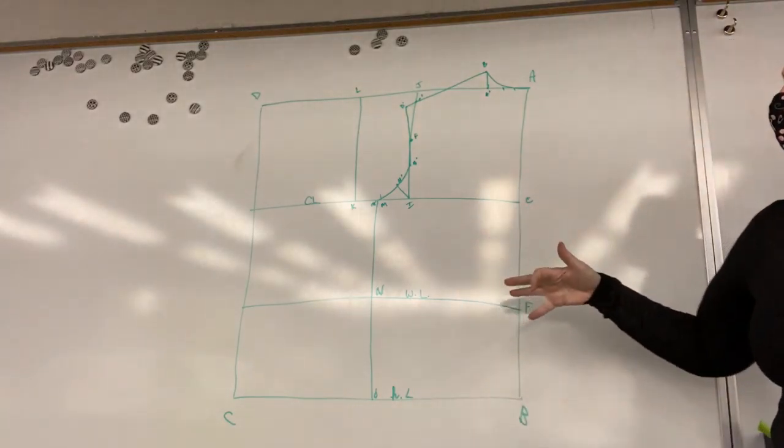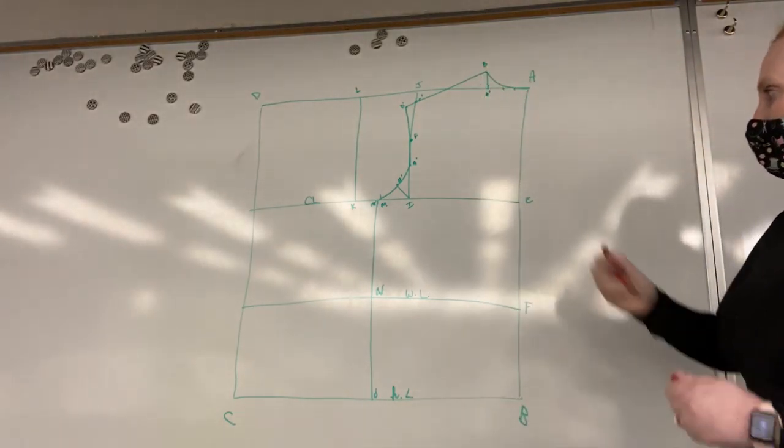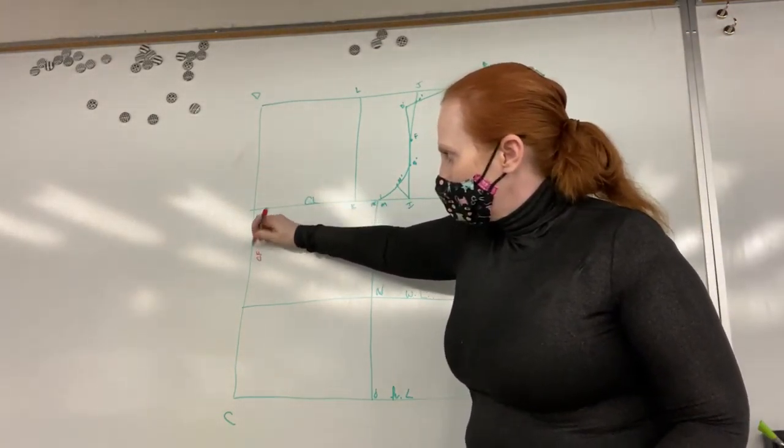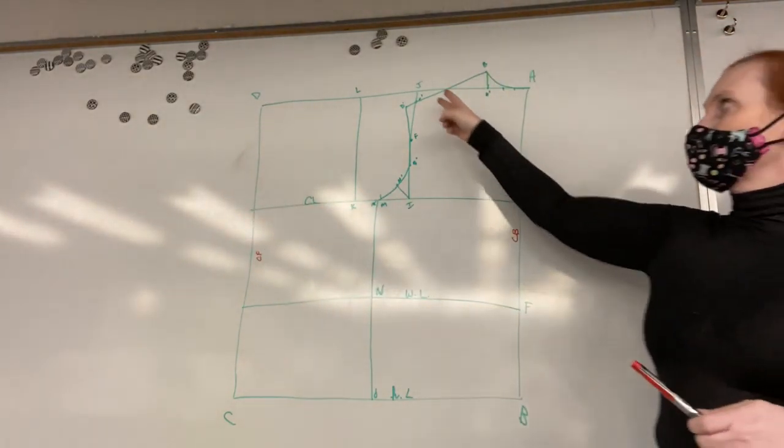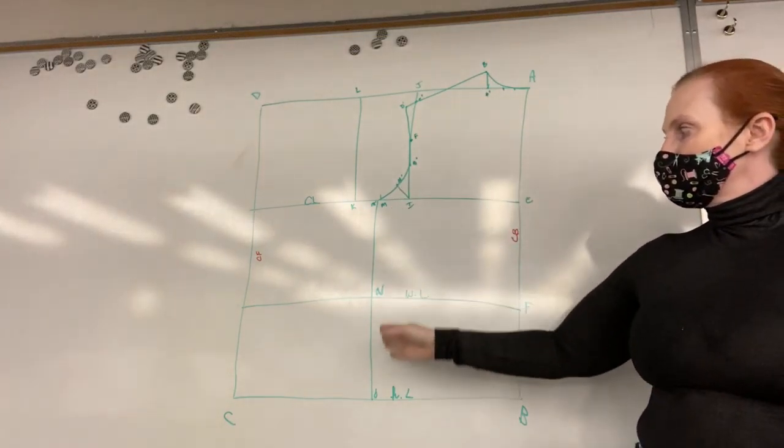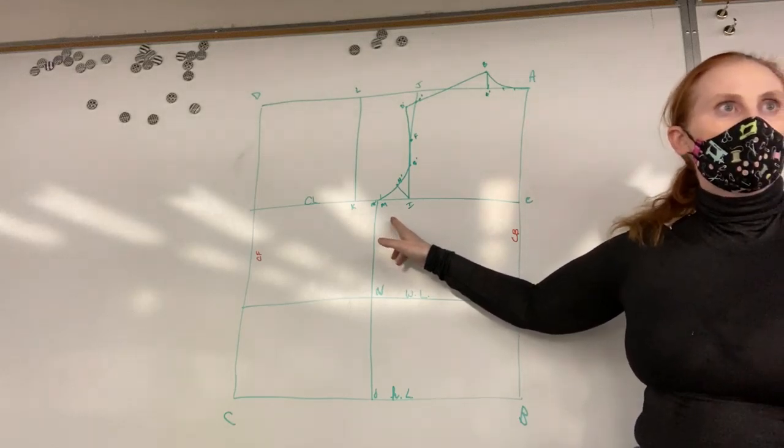So last time this is where we left off. We had the back sloper finished. This is the center back. This is going to be the center front. We had the armseye complete, the shoulder seam, the neck seam complete. We have our side seam complete because it was drawn on there already.